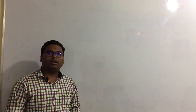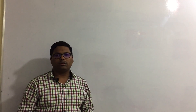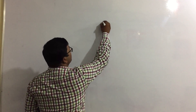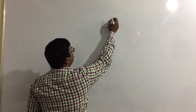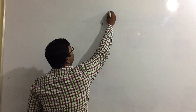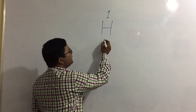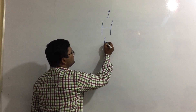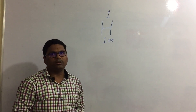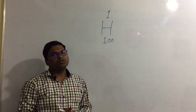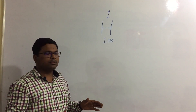Let us get back to the periodic table of elements. In the periodic table, hydrogen is shown with a number above it and another number at the bottom. This is a very general pattern for hydrogen or any element.